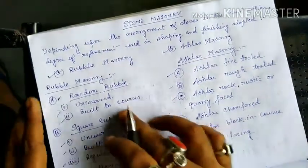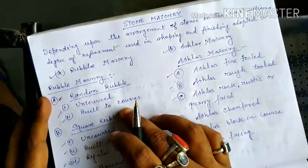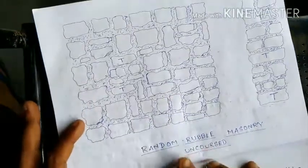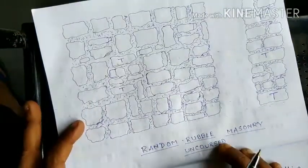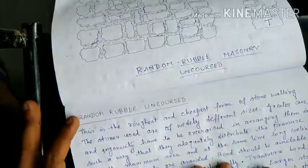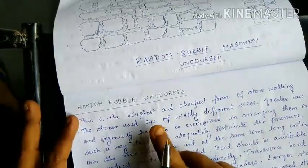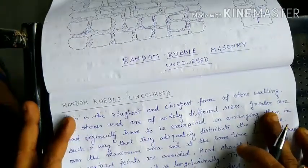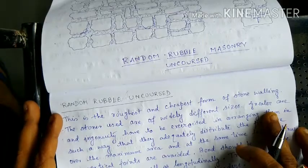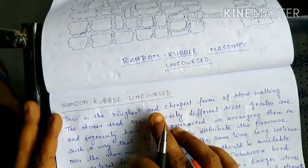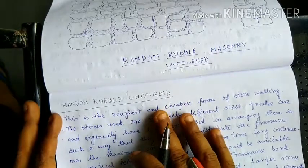Rubble masonry is called uncoursed or built-to-courses. Ashlar masonry is the finer division compared to rubble masonry. Ashlar masonry can be further described as fine-tooled, which is smooth and fine, while rough-tooled is rougher in finish.